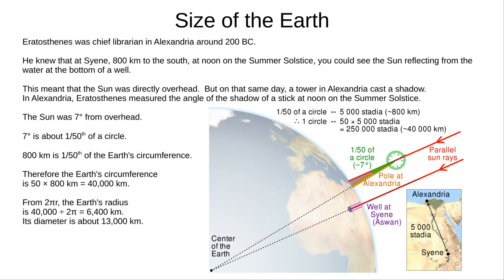And using the circle formula 2πr, we get a diameter for the earth of about 13,000 kilometers.